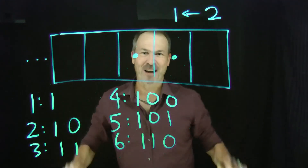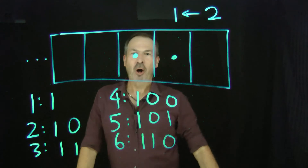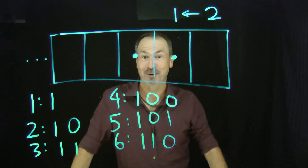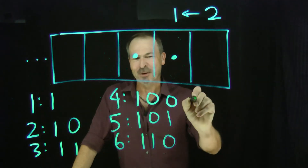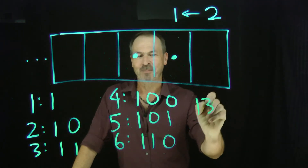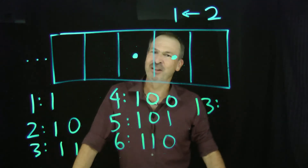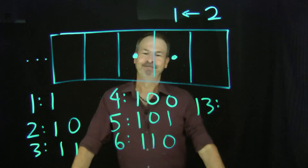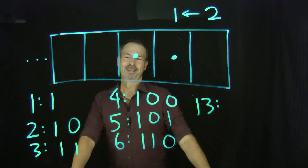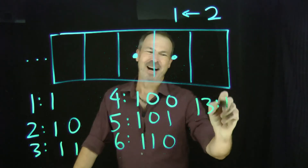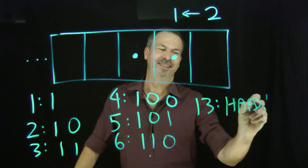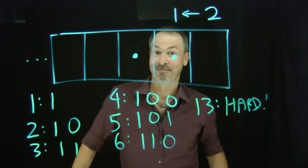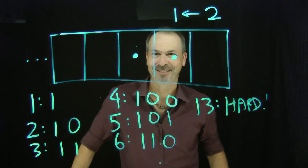Hours of fun to be had working out codes for different numbers in my 2-1 machine, though maybe I'll skip some numbers. What's the code for thirteen going to be? Suddenly that seems hard. Do you want to give it a try?